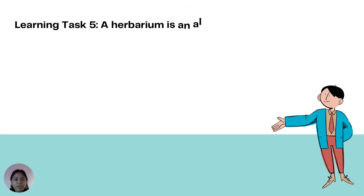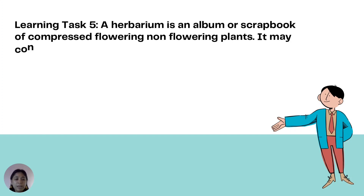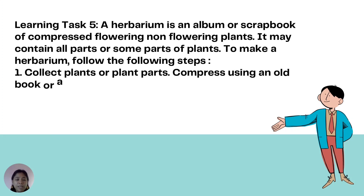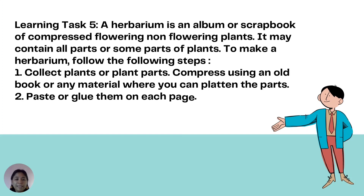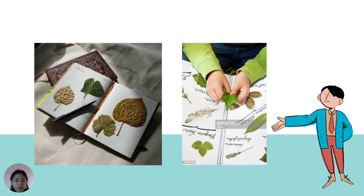For Learning Task 5, a herbarium is an album or scrapbook of compressed flowering and non-flowering plants. It may contain all parts or some parts of plants. To make a herbarium, follow these steps: first, collect plants or plant parts and compress them using an old book or any material that can flatten the parts; second, paste or glue them on each page; third, indicate the name of the plants and their classification. This is an example of a herbarium or plant album.